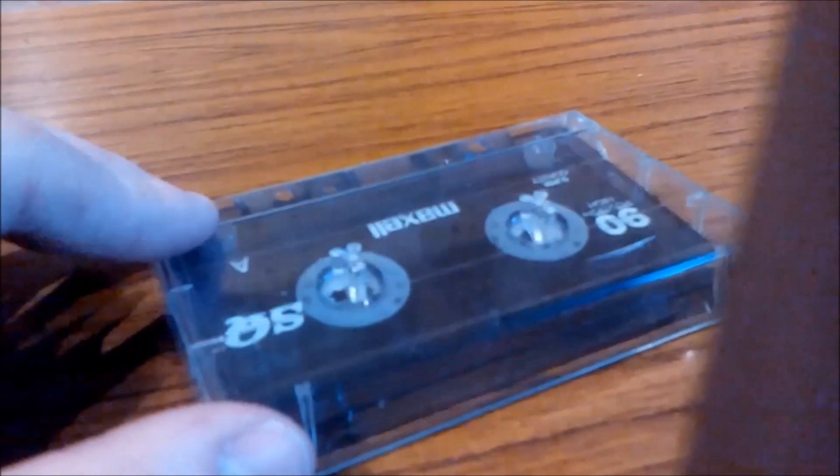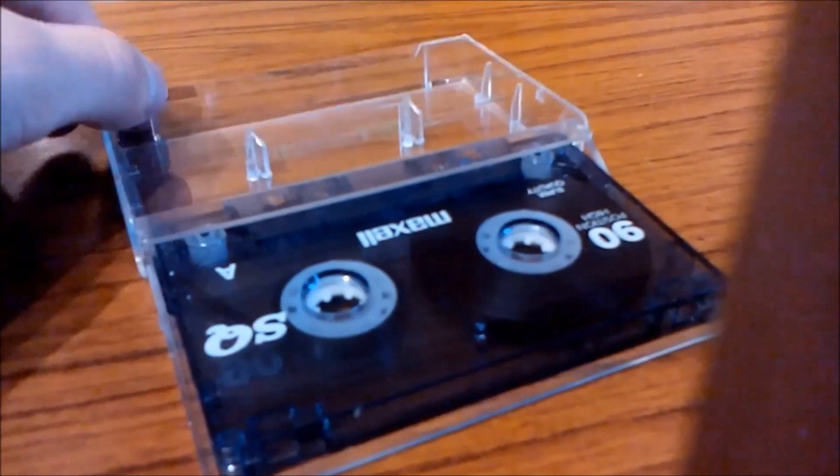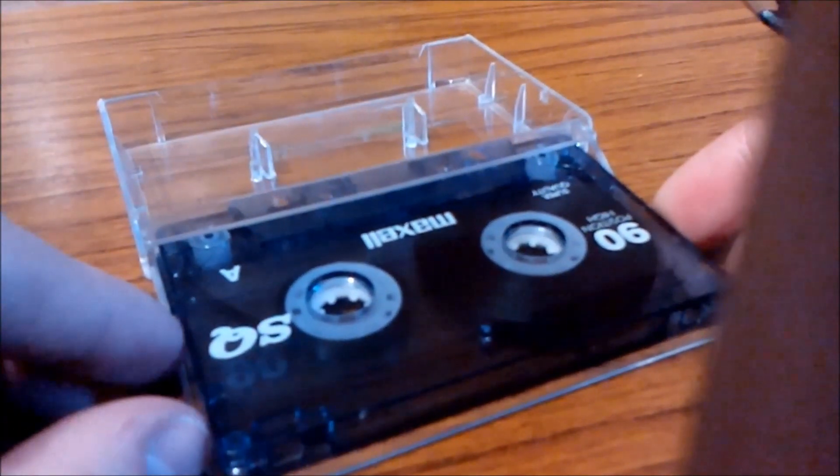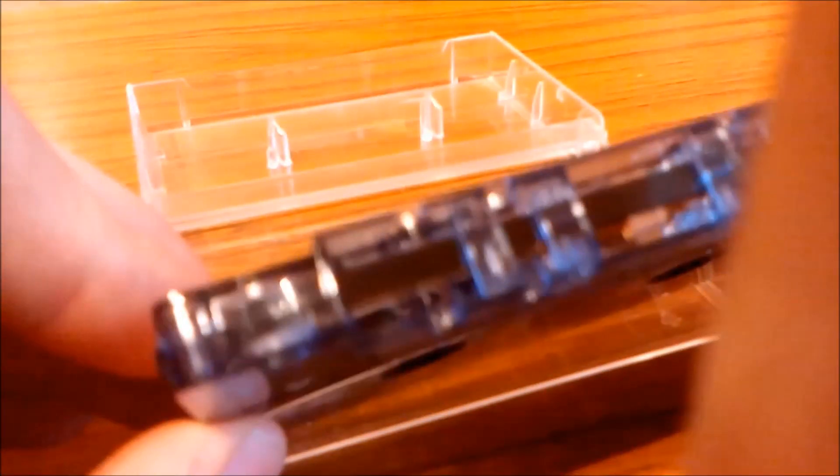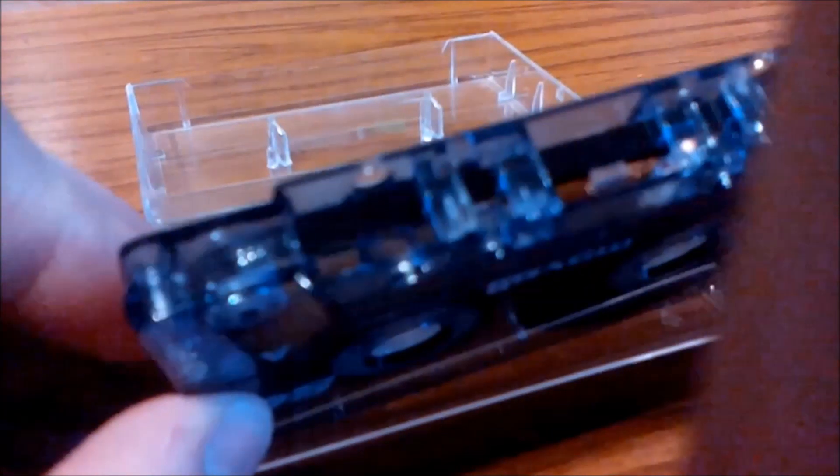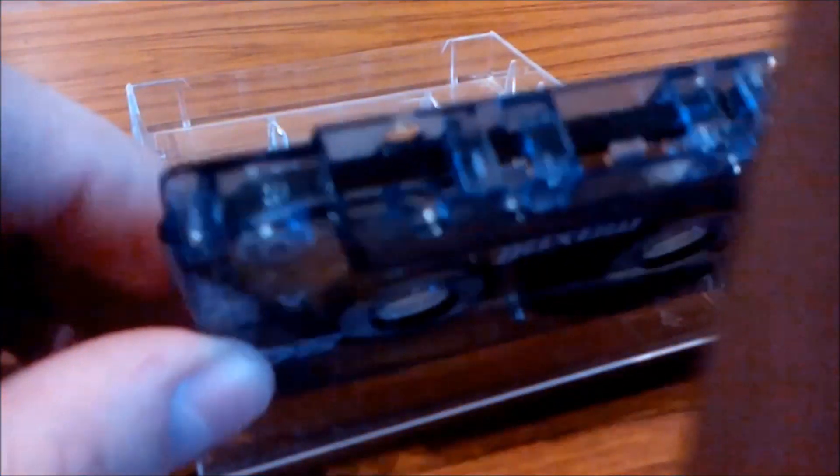The tape consists of a thin plastic base material coated with ferric oxide powder. It's an oxide of iron. The oxide is ferromagnetic. This means that when it's placed in a magnetic field it will be permanently magnetized. This is the basic principle of the cassette tape. That's also why you shouldn't store cassettes near magnets.